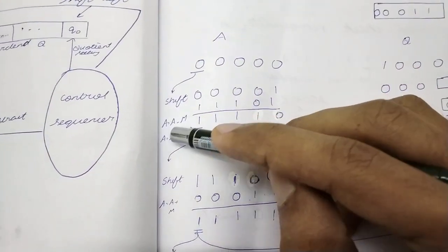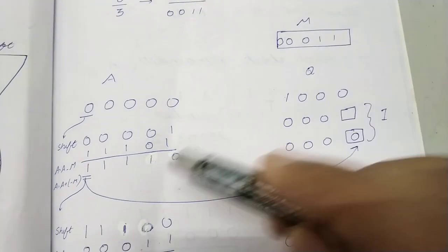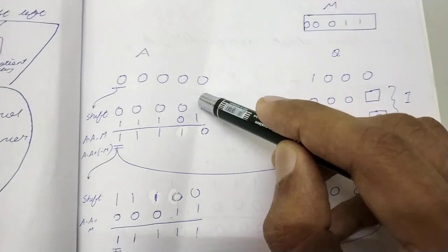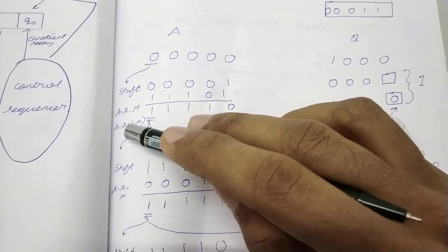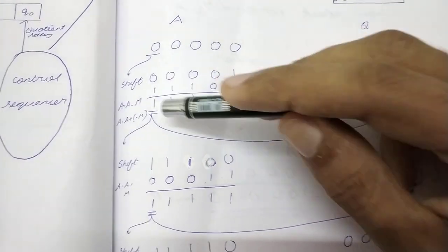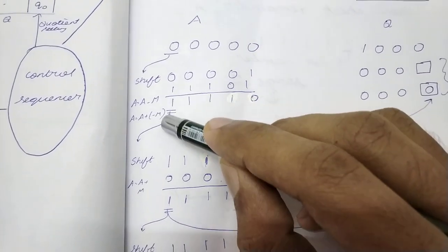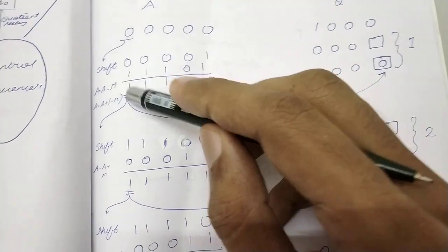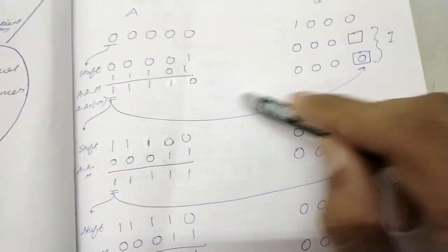Now we do A = A minus M. We cannot subtract directly, so we do A plus (minus M). We take the 2's complement of M and add it to A. The result is 01111. Whatever is in the first bit, we take its complement and write it into the vacant LSB of Q. That is the end of the first iteration.